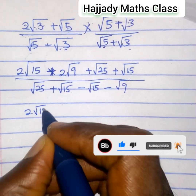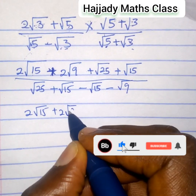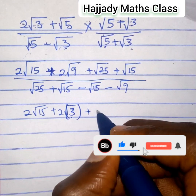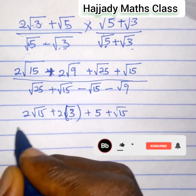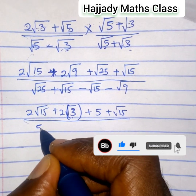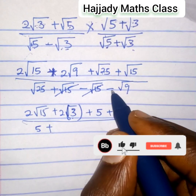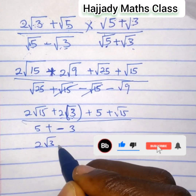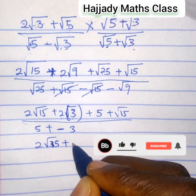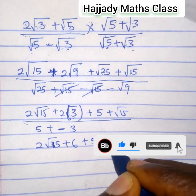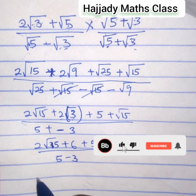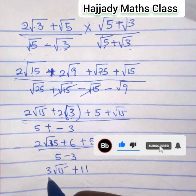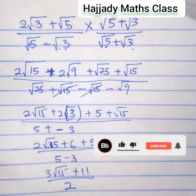Solving further, root 9 is the same as 3. The square root of 9 is the same as 3. Plus the square root of 25 is the same thing as 5. So root 25 gives 5, root 15 minus root 15 cancel out, and minus root 9 gives 3. So we have 2 root 15 plus 6, plus 6 plus 5 plus root 15, all over 5 minus 3. And here 2 root 15 plus 1 root 15 gives 3 root 15, plus 6 plus 5 gives 11, all over 5 minus 3 gives 2. So this is our final answer.